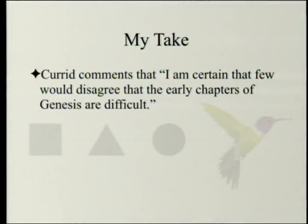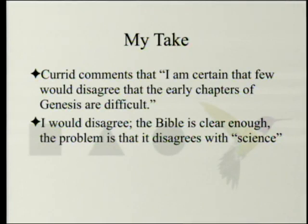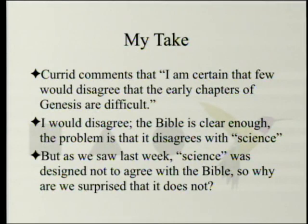Currid comments that few would disagree that the early chapters of Genesis are difficult. Actually I would disagree with Currid at this one point. The Bible is clear enough. The problem is that it disagrees with science. It's really a clear narrative — there might be a few rough edges, but it's really pretty obvious. It just won't go wherever some people want it to go. As we saw last week, science was designed not to agree with the Bible — so why are we surprised that it doesn't?